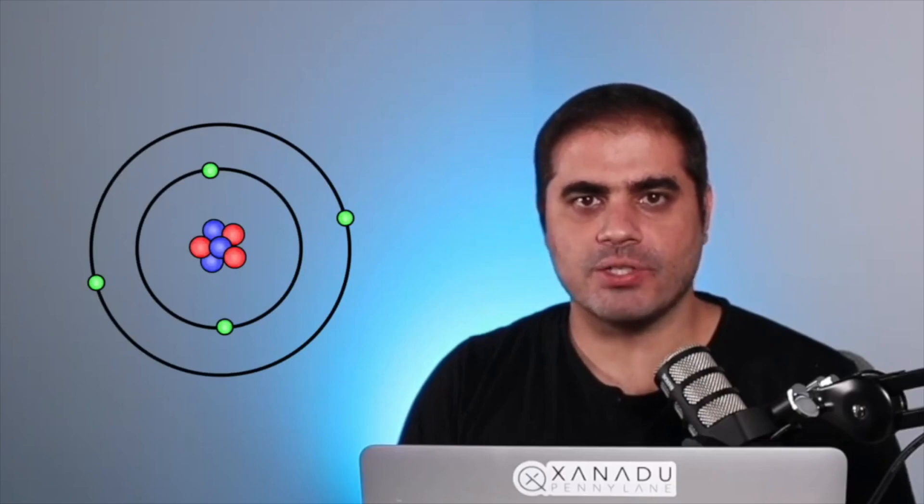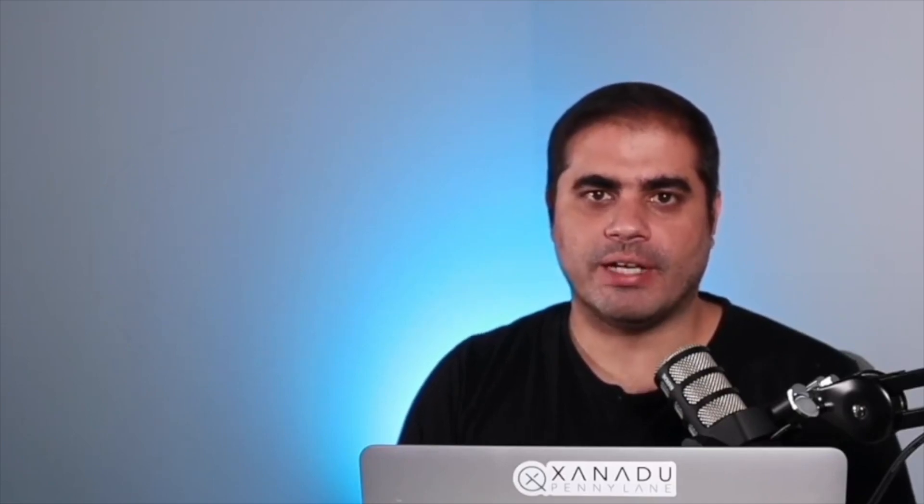At school, you may have learned that electrons around atoms occupy certain energy levels, or atomic orbitals. What they may not have told you is that in molecules the exact same thing happens. Electrons also occupy energy levels known as molecular orbitals.